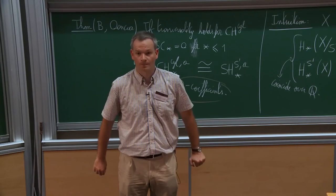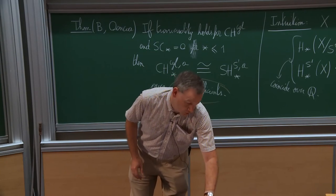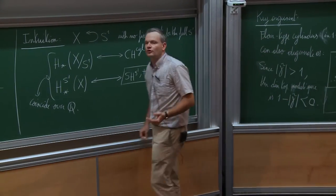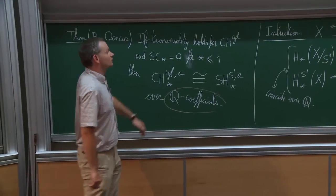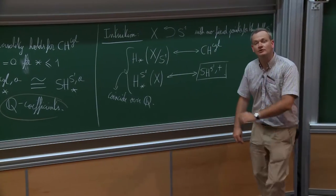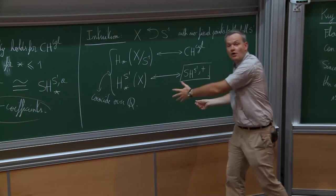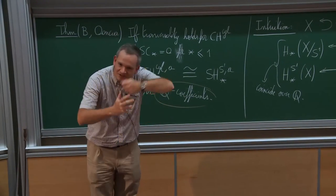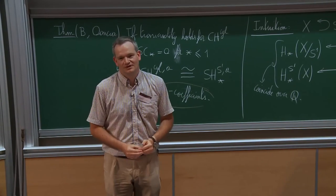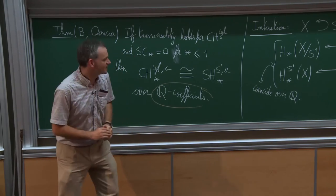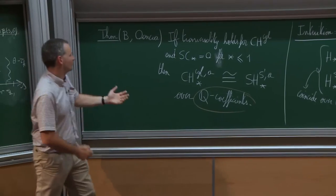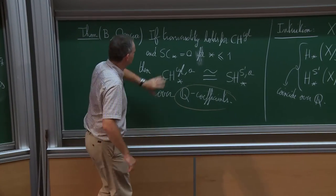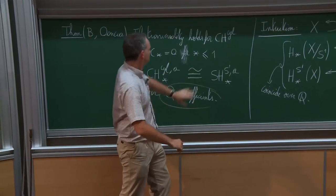I'm already over time, so I just want to finish by saying that indeed, applications that were already done or thought of using cylindrical contact homology can be obtained via this invariant SH^{S¹,+}. The price to pay for using the right-hand side instead of the left-hand side is that it's more complicated to compute—it's not purely holomorphic curves and you have all these extra things. But it is possible to do that.